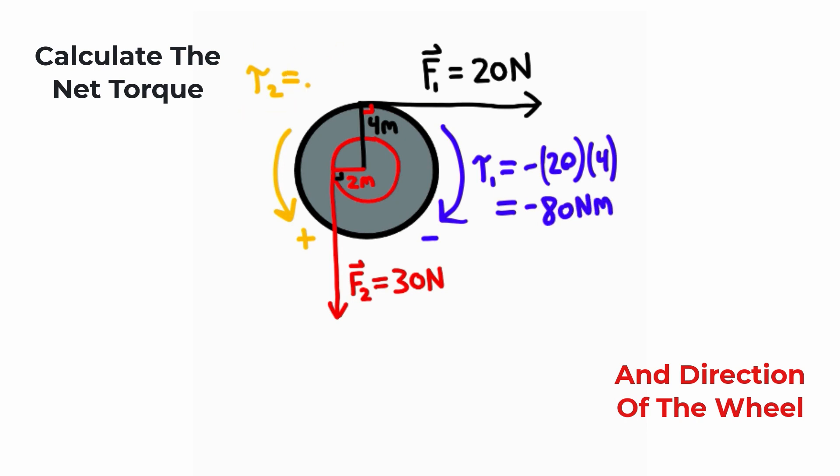Now for torque two, I'm going to plug in our 30 newtons of force, which we have right down here, and I'm going to multiply this by our 2 meter distance, and 30 times 2 will give you a torque of 60 newton meters.